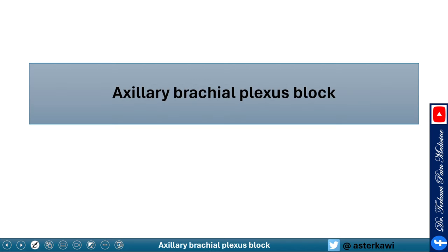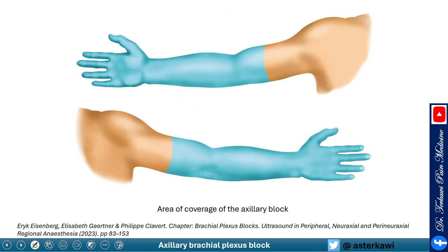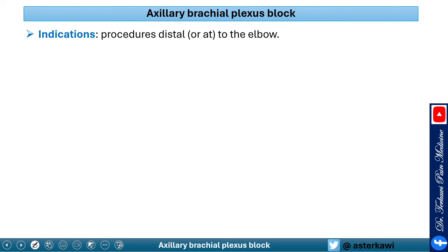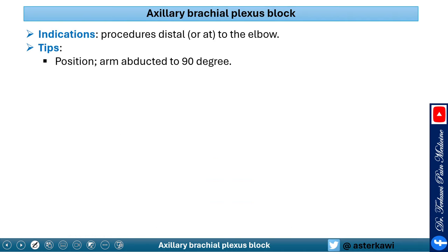Finally, the axillary brachial plexus block is an injection targeting individual terminal branches — namely the radial, ulnar, median, and musculocutaneous nerves. It is recommended for procedures at or below the elbow. For elbow procedures, also supplement the intercostal brachial nerve for tourniquet coverage. For this block, abduct the arm 90 degrees. There is notable anatomical variability: classically the musculocutaneous nerve is outside the sheath in the coracobrachialis muscle, but in about 30–35% of cases the distribution varies, and you can get all nerves inside the sheath or in different locations.